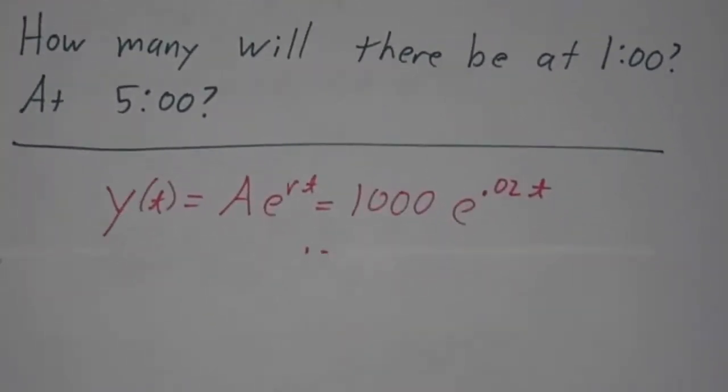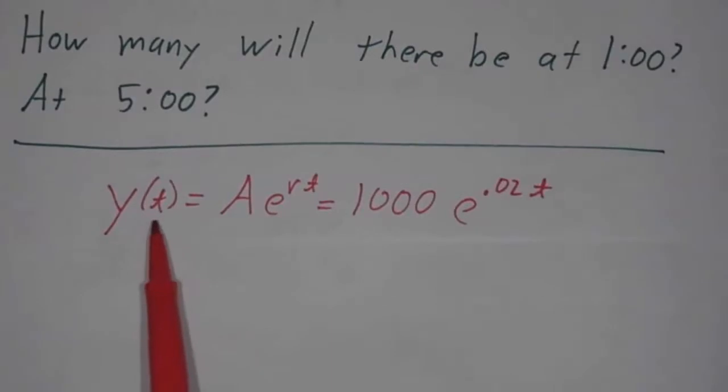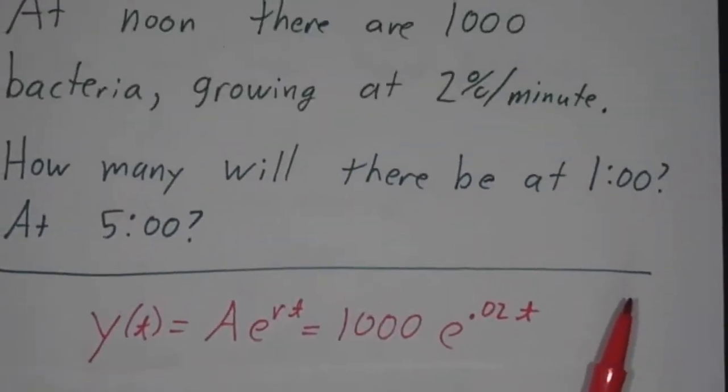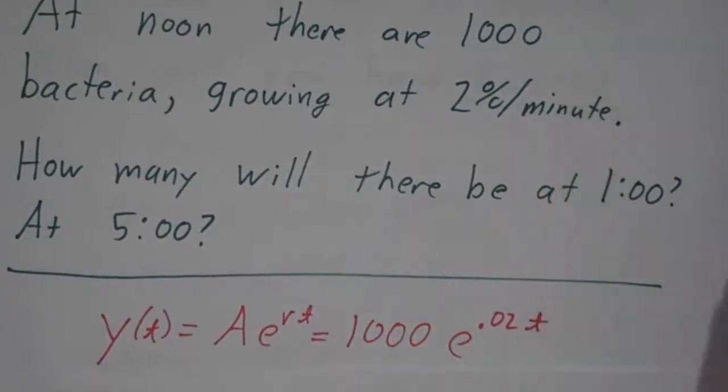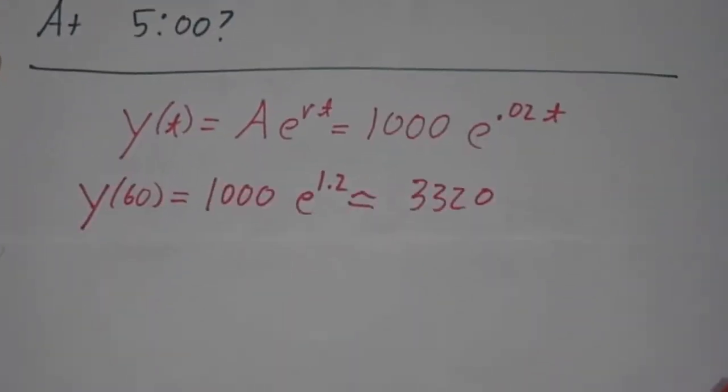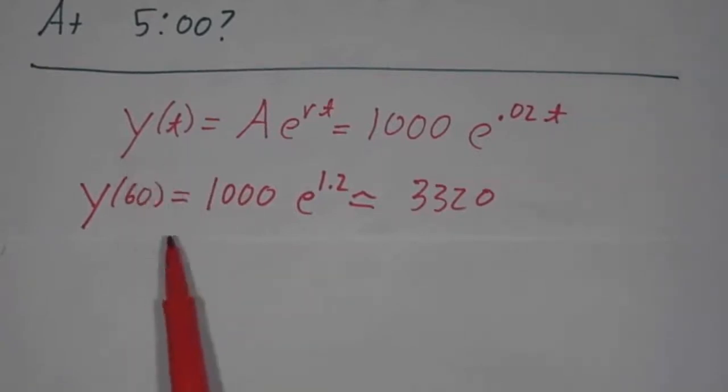Well, this is straightforward. The number you have at time t is a e to the rt. And since we said they were growing at 2% per minute, r is 0.02 per minute. So we better measure our time in minutes. So one hour from now is 60 minutes. So it's the 1,000 times e to the 0.02 times 60. That's 1.2. And it works out to a little over 3,000, 3,320.